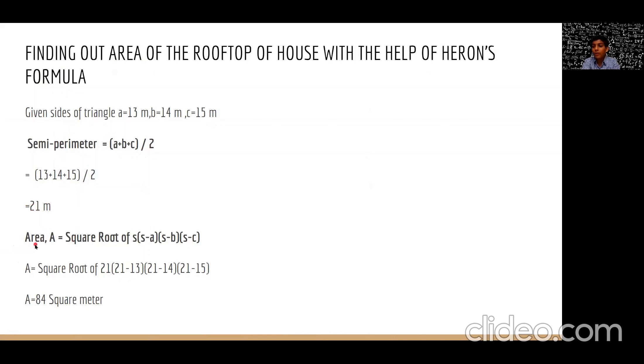Now, we put it in the formula of Heron's formula. Area a equal to square root of s into s minus a into s minus b into s minus c. a is equal to square root of 21 into 21 minus 13 into 21 minus 14 into 21 minus 15. a is equal to 84 square meter.